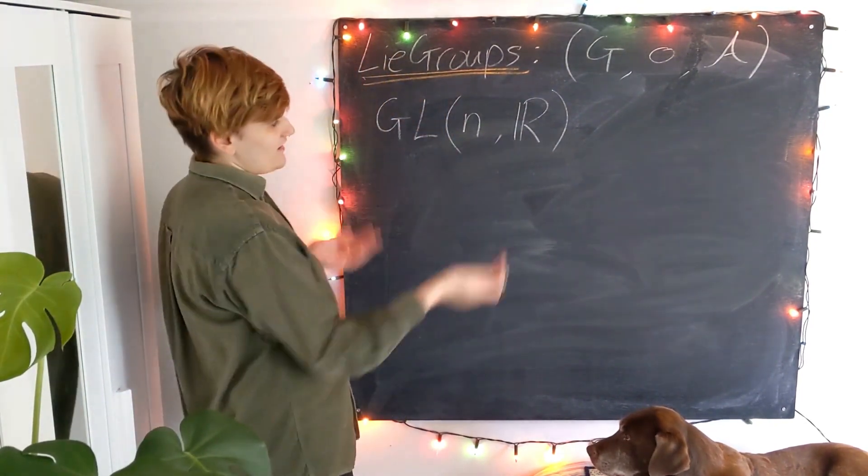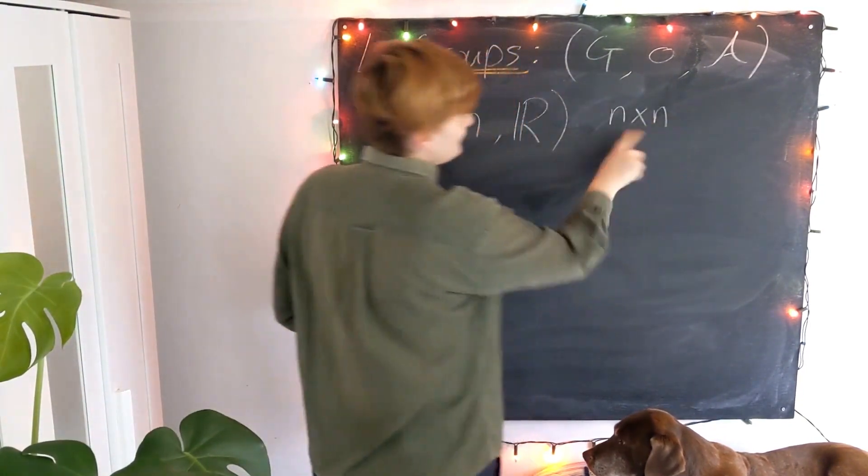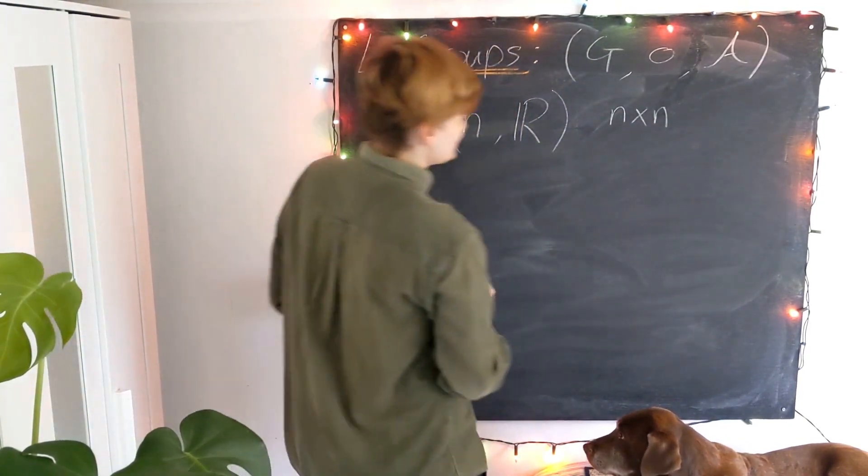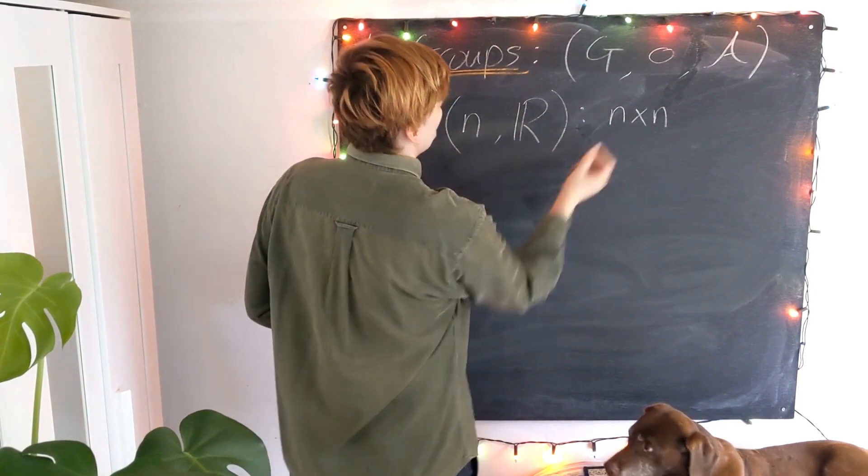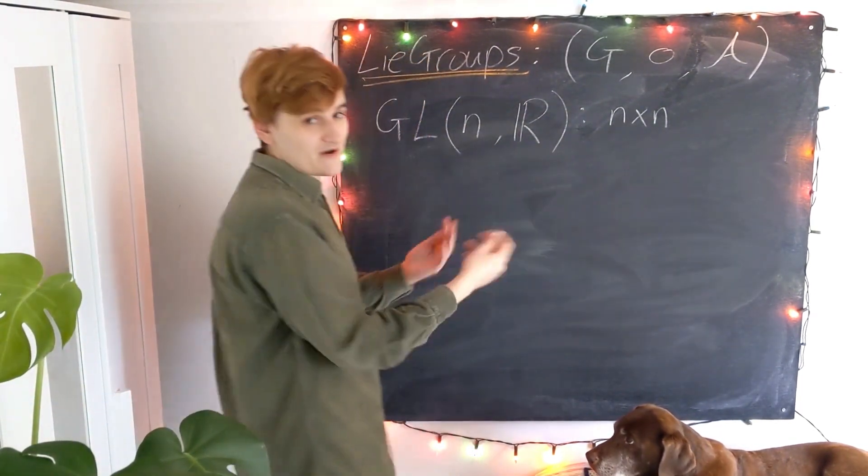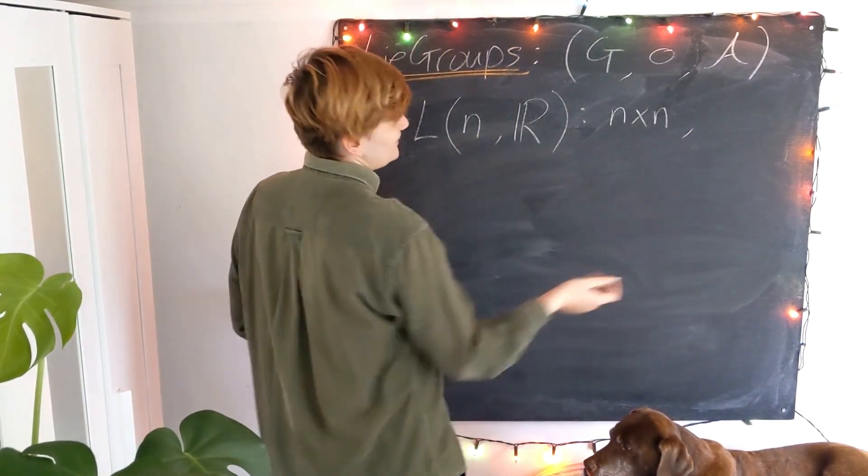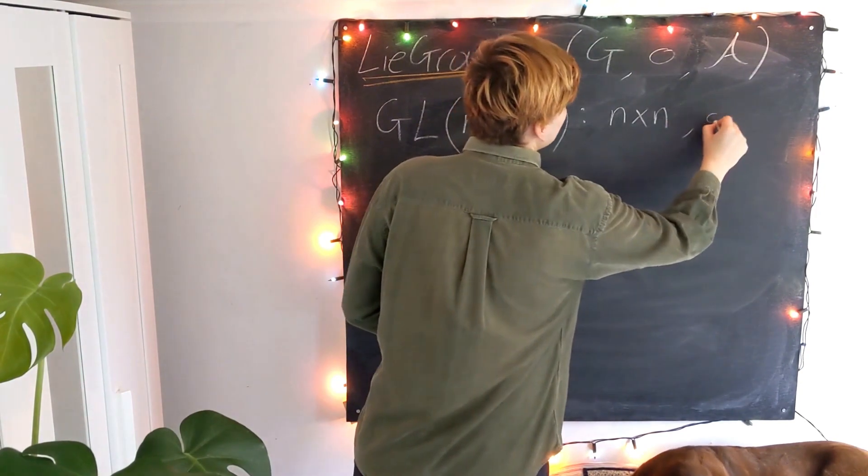So this is the real general linear group. Essentially as a group this consists of the set of all n by n, so n dimensional square matrices. The general linear group is essentially the set of all possible n by n square matrices that are also invertible.